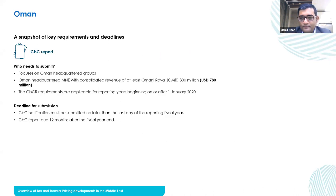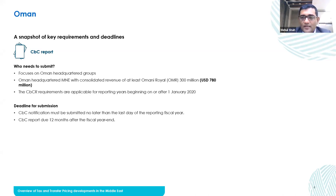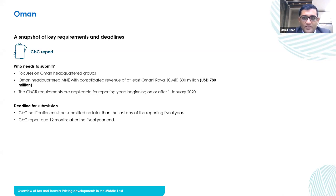Coming to Oman — they only have a CBCR reporting requirement and don't have any other requirements as such. It focuses on Oman-headquartered groups only, so only outbound companies; it doesn't include inbound companies. They have put a threshold of 300 million Omani Rial. The CBCR requirements are basically starting from 1st January 2020, so last year was the first year for the applicability of CBCR.